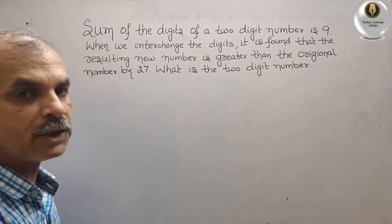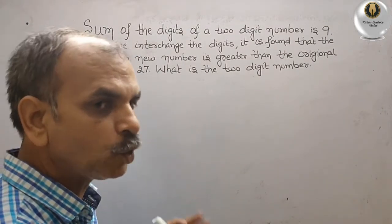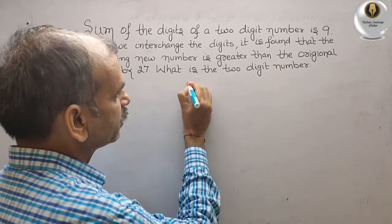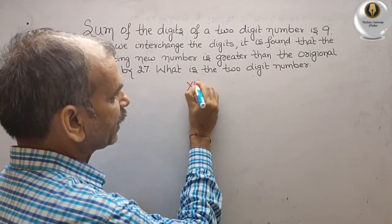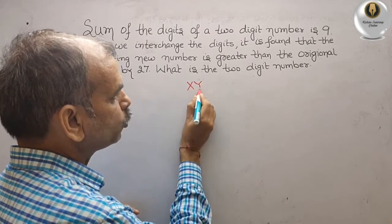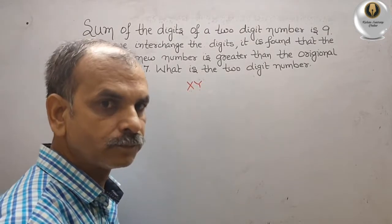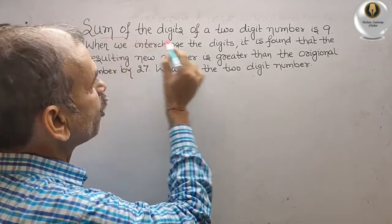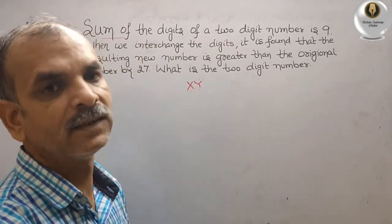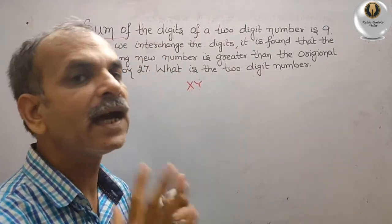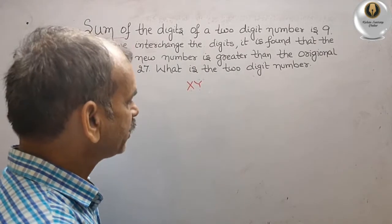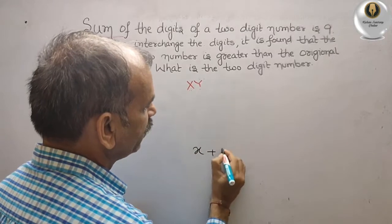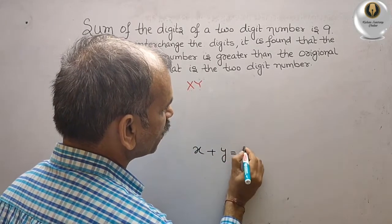We have a two-digit number. Suppose the two-digit number is XY — these are the two digits. By the first statement, the sum of the two digits is 9, so x plus y is equal to 9.